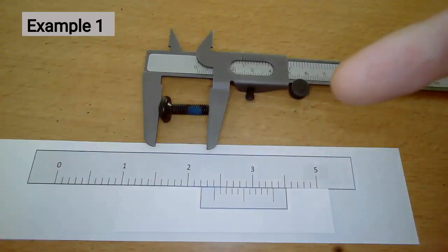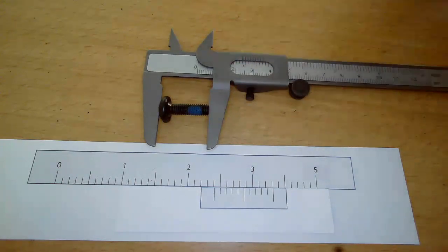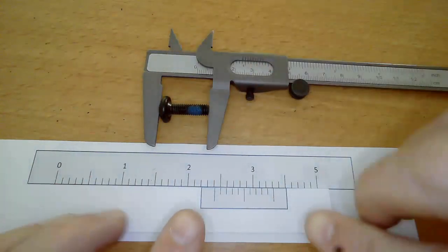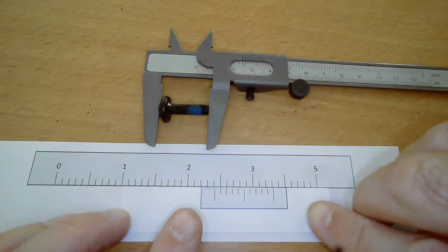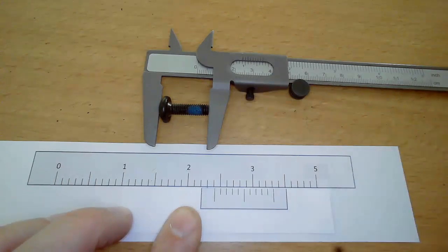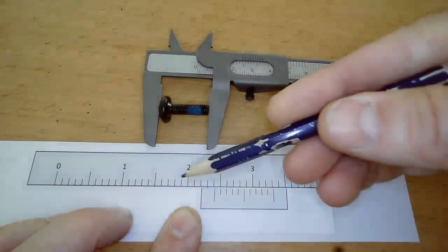Unfortunately with this camera we get parallax error when reading the scale. So I've taken a measurement of the screw length and recreated the vernier scale reading on my model here.